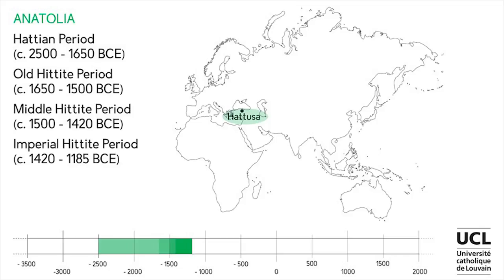Domain 5: Anatolia. The important historical periods include the Hattian period, the Old Hittite period, the Middle Hittite period and the Imperial Hittite period. The important sites include Hattusa. Anatolia roughly corresponds to modern Turkey. In the second millennium, the Hittites held sway in this land, especially in Central and North Anatolia. These people were culturally influenced by the previous Hattian civilization as well as the Luwians who lived in South and West Anatolia. They are especially noteworthy for their sophisticated form of polytheism, calling their land the Land of the Thousand Gods.